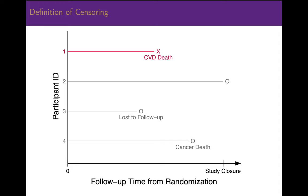We have partial and incomplete data. We will want to use this data in the analysis and not just ignore it, because this person's partial information indicates some measure of success — we know that up to the point the participant was lost, this person had not had the outcome. Note that for the integrity of a study, missing data due to lost participants should be minimized.